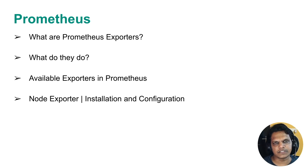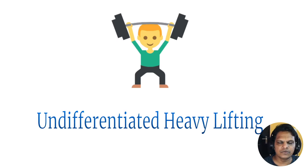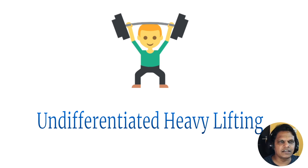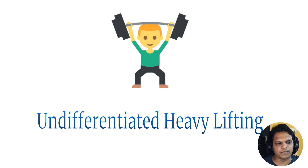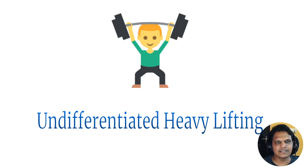To understand Prometheus exporters, let's take an example of the famous phrase in IT: undifferentiated heavy lifting. Undifferentiated heavy lifting is a term mostly used in cloud computing, and it refers to tasks which are repetitive, labor-intensive, and do not provide any strategic or unique value to the business.